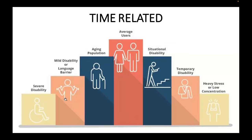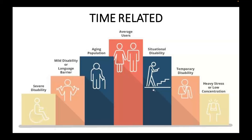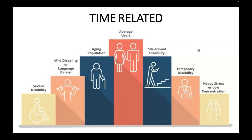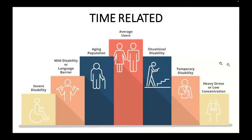Then there are mild disabilities, language barriers, and severe disabilities such as paralysis, motorial dysfunction, and physical handicaps. Situational disability while driving is usually environmental. Temporal disability means you're temporarily unable to work — you broke a leg or hand, got a trauma at the gym, experienced heavy stress, a loss in the family, or loss of concentration. That is temporary disability.